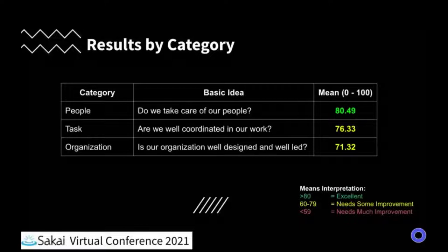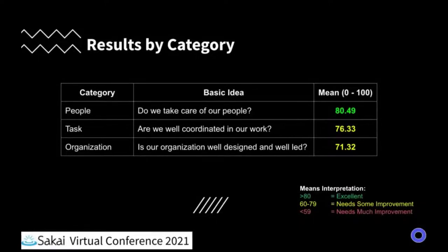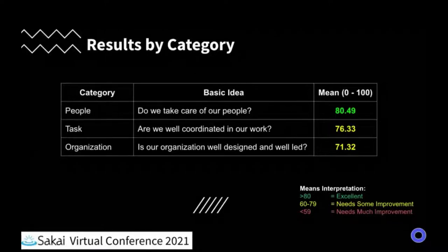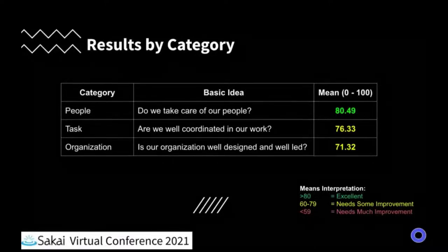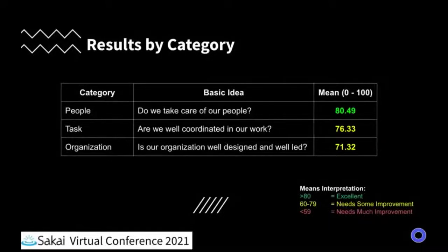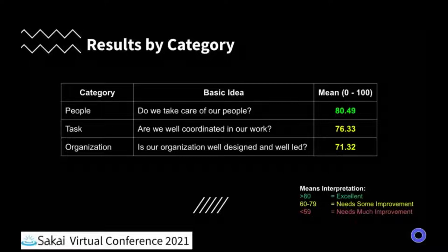The highest-level results are what we call the categories — three broad categories combining all nine factors. Category names on the left, the basic idea in the middle column, and on the right is what the Sakai community told us about how they thought they were doing. The first category — People: do we take care of people? Doing pretty well, excellent in fact. The second two categories — are we well coordinated in our work, and is our organization well designed and well led? Still doing pretty well, but those rank as having some small improvements that could be made. Overall, the community looks, according to these measures, pretty healthy with small areas of improvement.